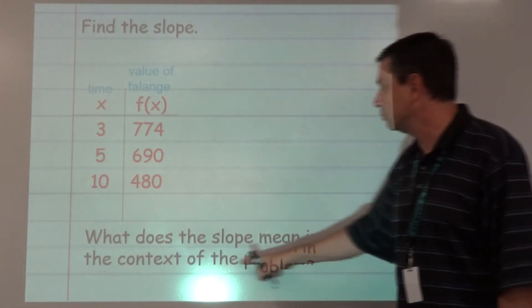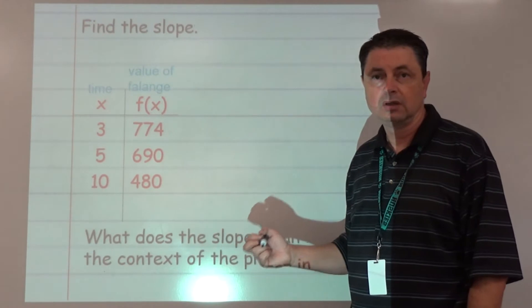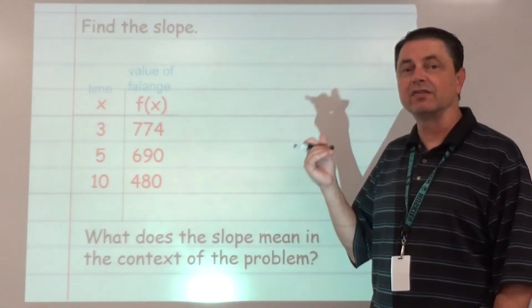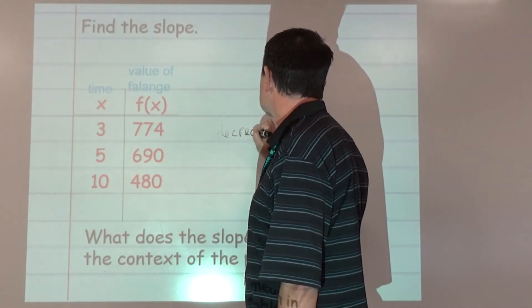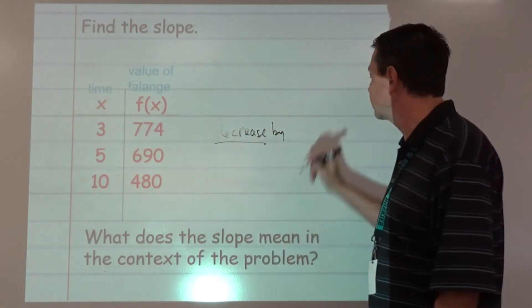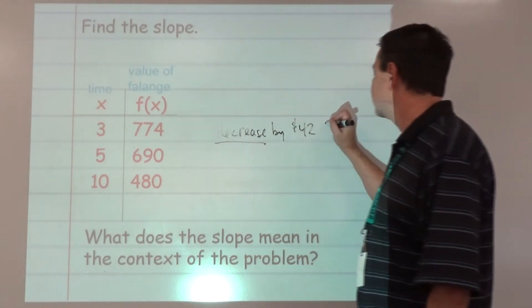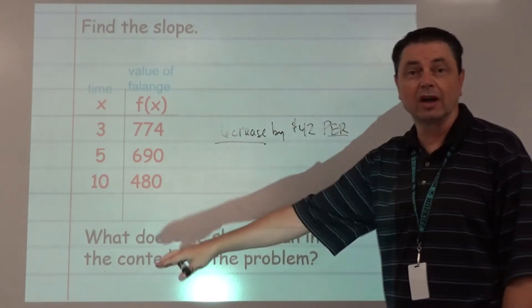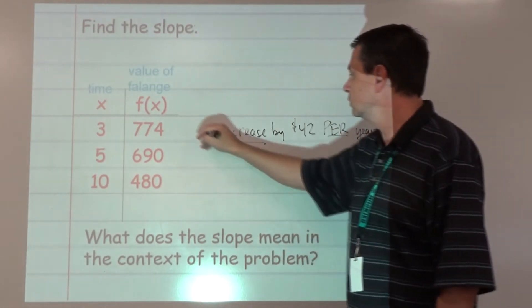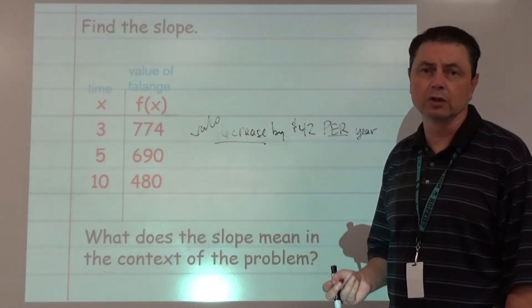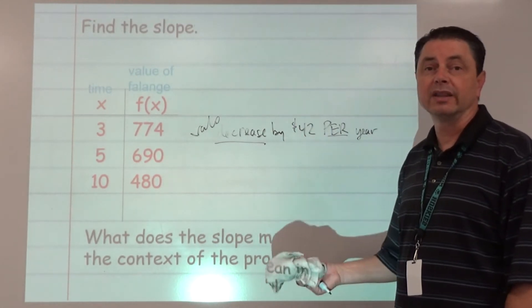Slope is negative 42. What does it mean in the context of the problem? Why is it negative? What's happening to our values? Going down. So we're decreasing by 42 dollars. Slope is a rate, and the key word for rate is 'per'. What was our x-axis scale? Each mark was a year. So it's going to decrease by $42 per year.